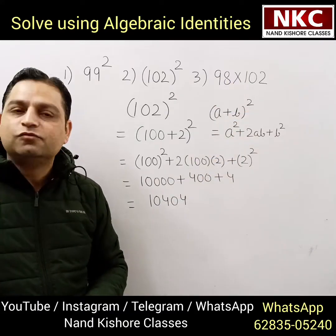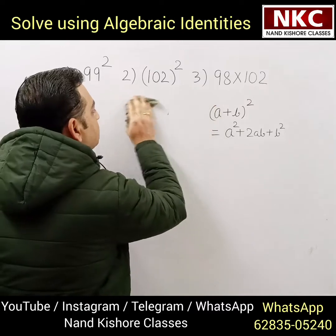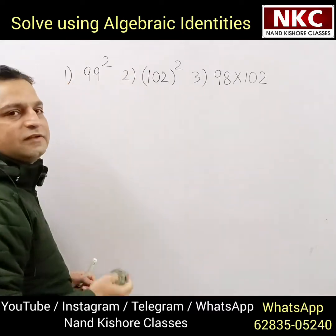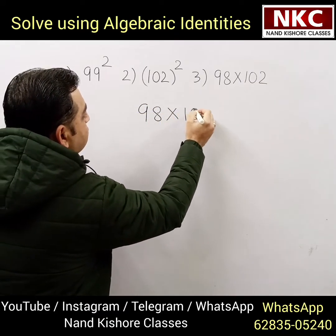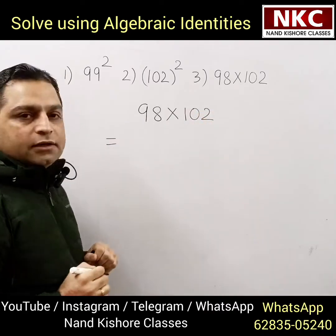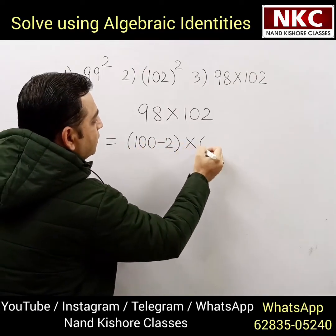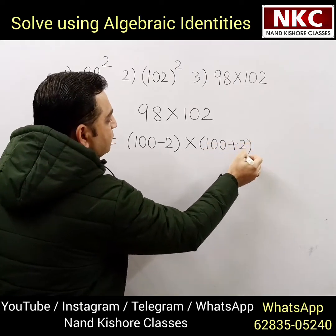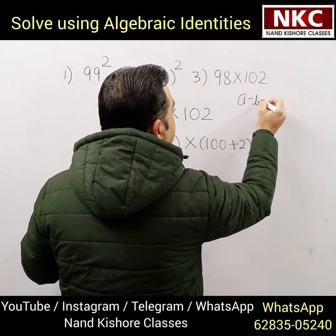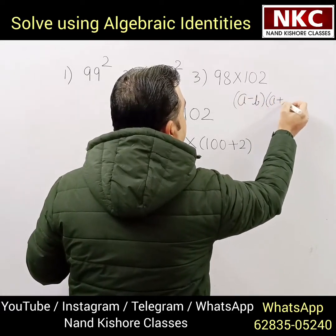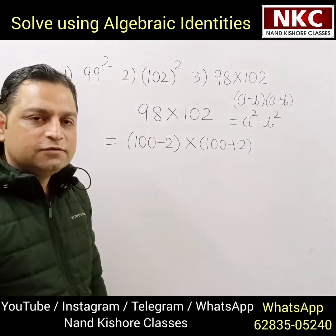The third one is 98 times 102. Many of you might be aware which identity we need to use here. 98 can be written as 100 minus 2, and 102 can be written as 100 plus 2. Now the identity is clearly visible: it is a minus b, times a plus b, which is equal to a square minus b square. This is the identity we are going to use.